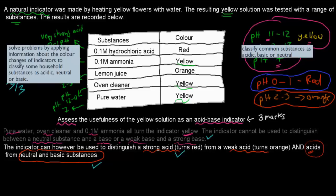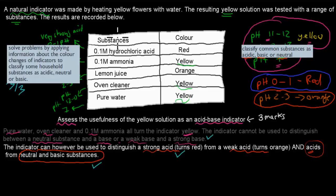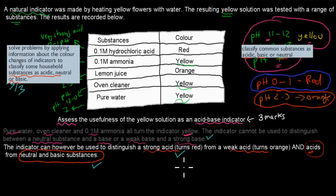These questions come from two syllabus dot points. The first is: classify common substances as acidic, basic, or neutral — which is why the question gave lemon juice, oven cleaner, and pure water without stating their pHs, assuming you know them. The second is: solve problems by applying information about the color changes of indicators to classify household substances as acidic, neutral, or basic.